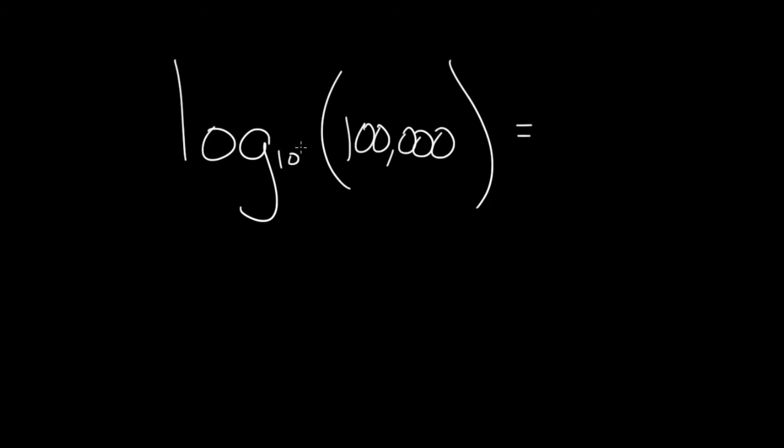if I'm log base 10, log wants to know what number would I raise 10 to in order to get this number in here. So log looks at this number in the parentheses, this entire number here, and asks, what number should I raise 10 to in order to get 100,000? Well, we know the answer to that. You should raise 10 to the fifth. And if I raise 10 to the fifth, I'll get 100,000.